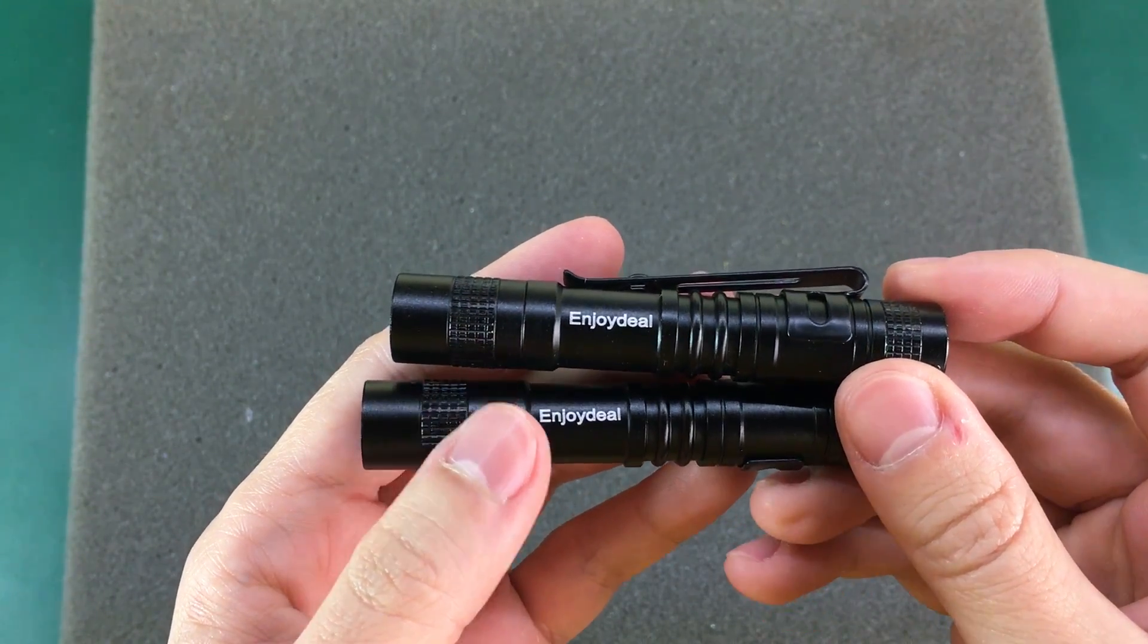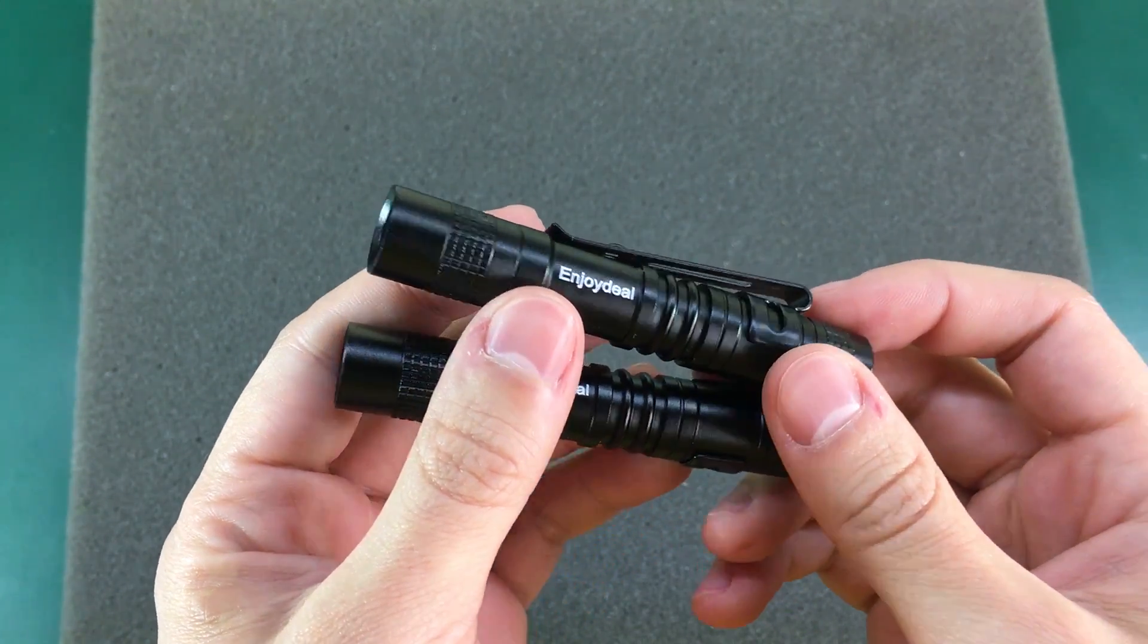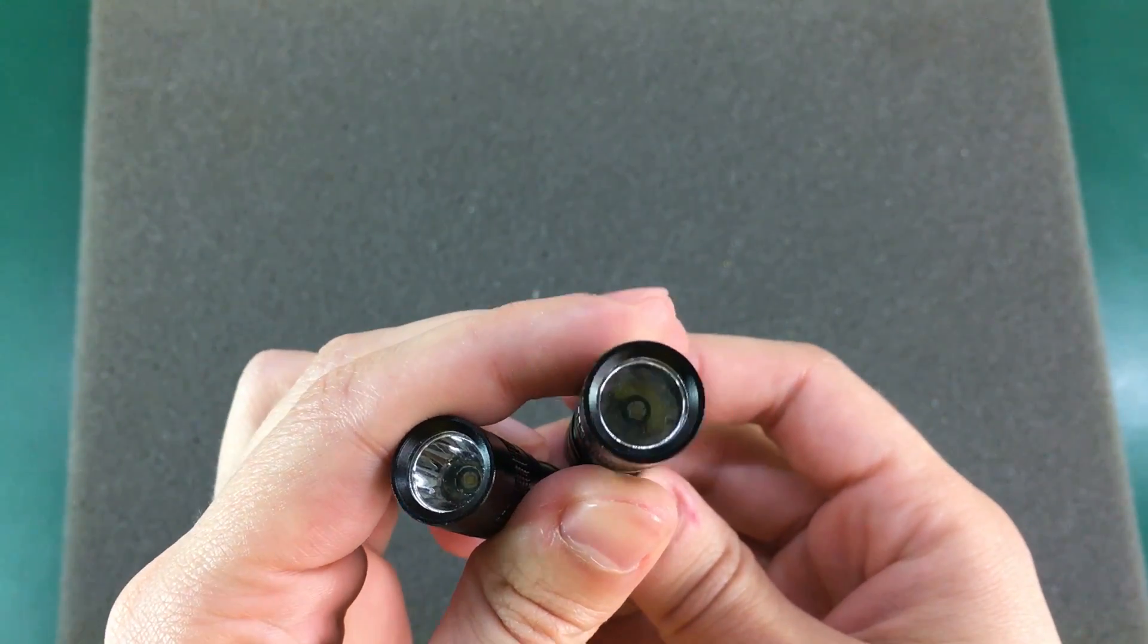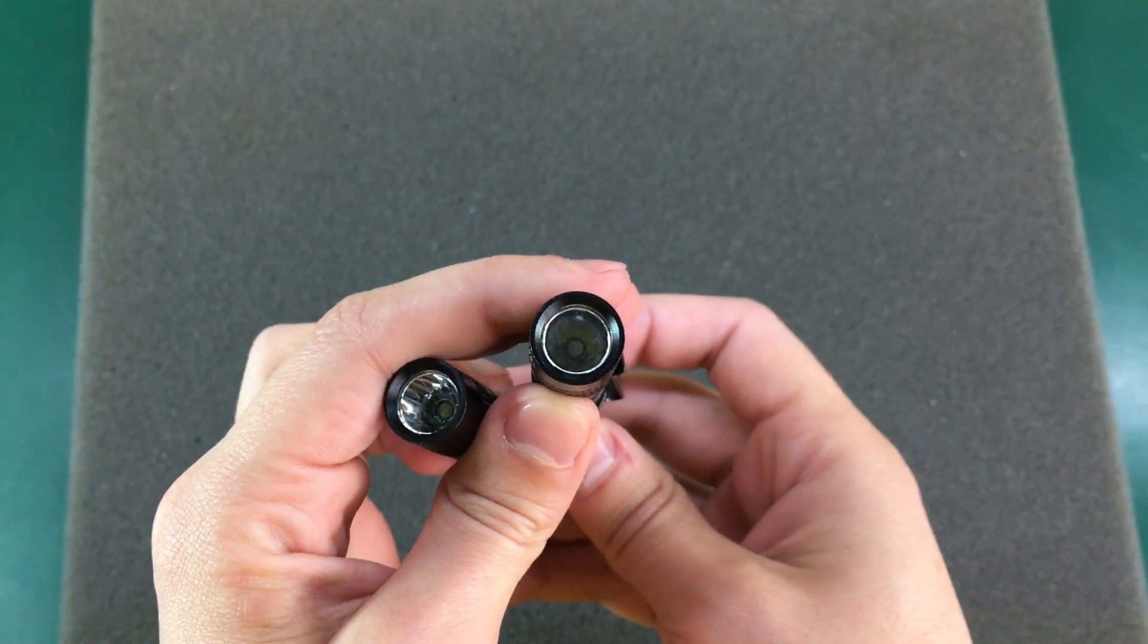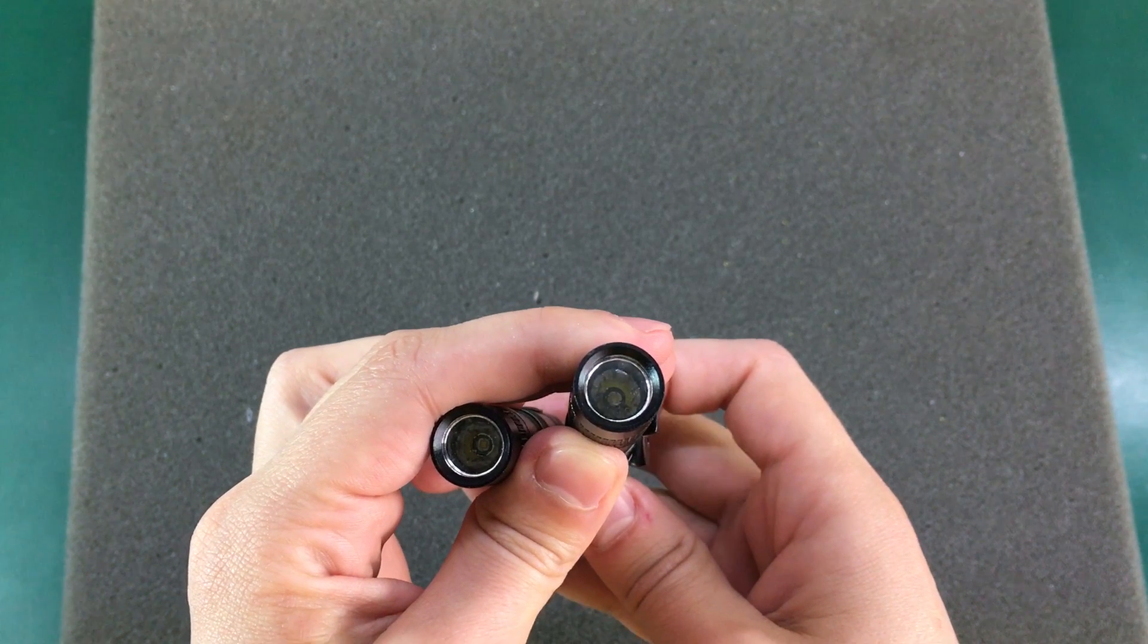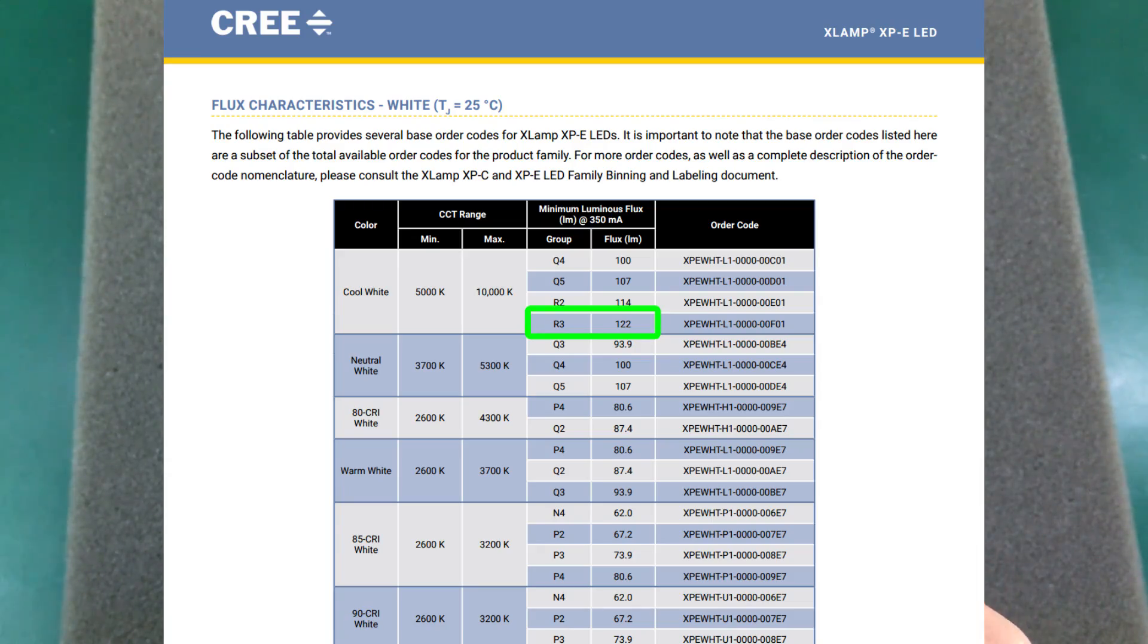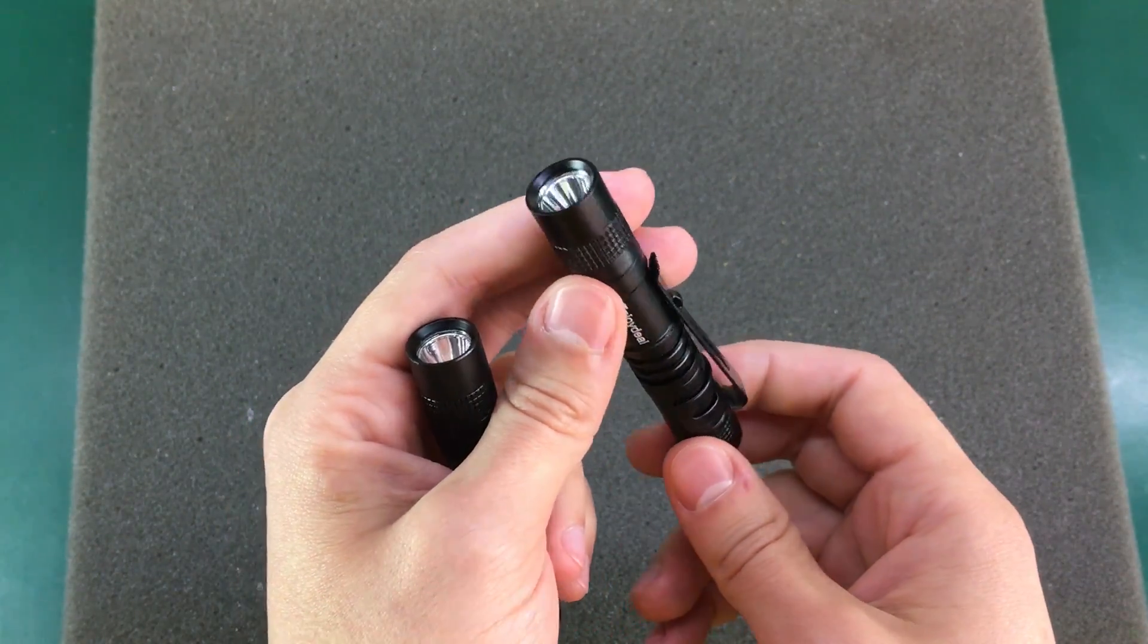These are a couple of AAA LED flashlights. They use the Cree XPE R3 LED, and although they are advertised as 1000 lumen flashlights, that is grossly overestimated because if we take a look at Cree datasheet, we see this LED is only capable of a maximum 122 lumens.